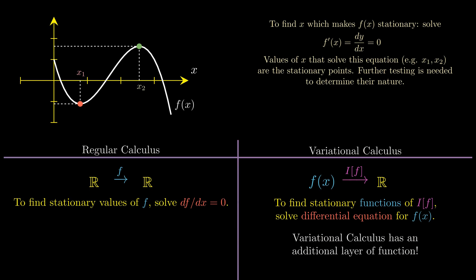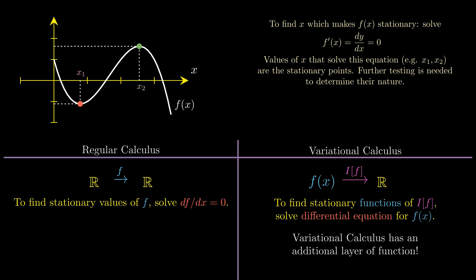These terms that I've discussed so far like functional and stationary functions might still be a bit abstract and confusing, so let me illustrate what they mean with an example of a typical problem you'll see in variational calculus. Suppose I have two points on the xy plane, A given by (x1, y1) and B given by (x2, y2). Suppose also that I wanted to find the path linking A and B that minimizes the distance between A and B.